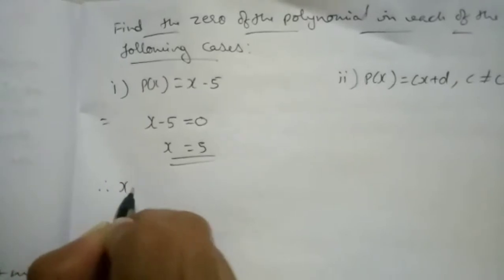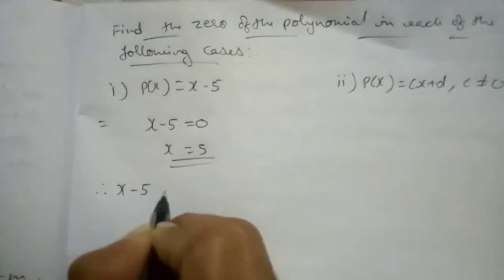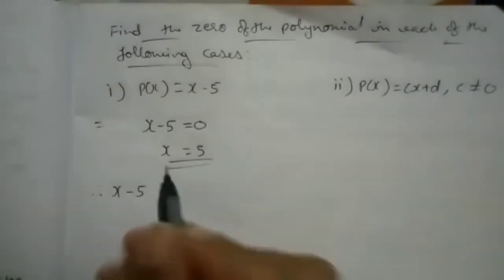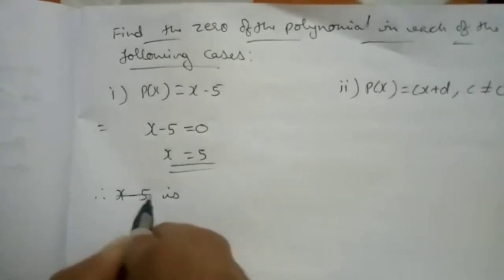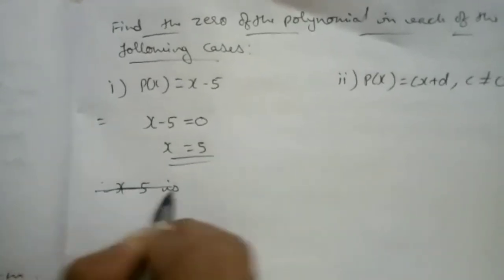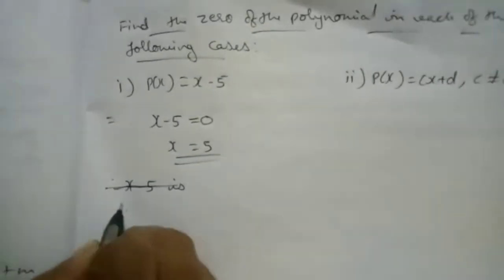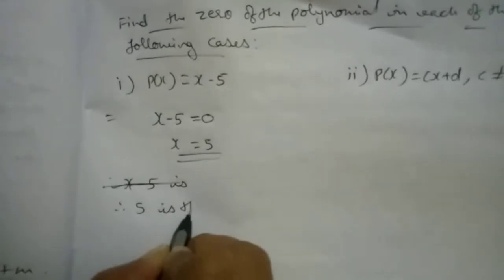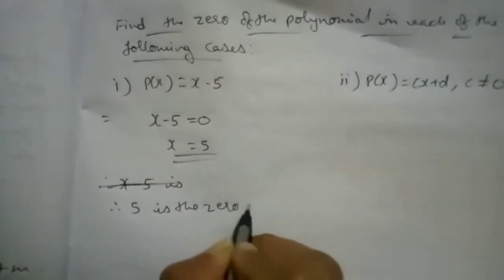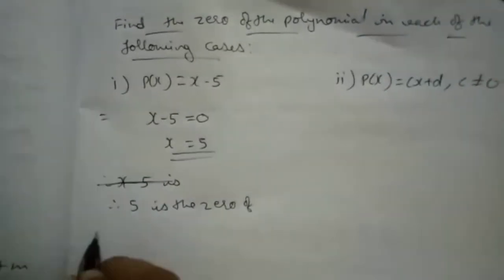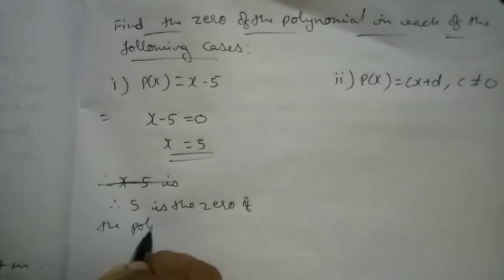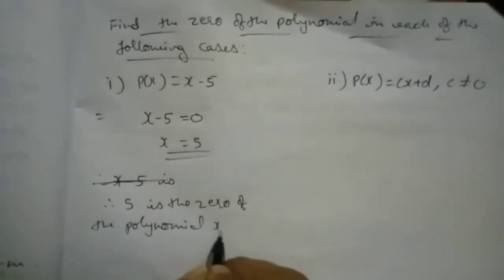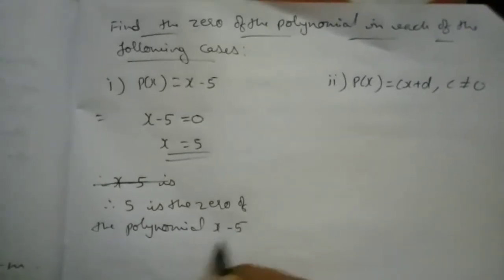Therefore x equals 5, so 5 is the zero of the polynomial x minus 5.